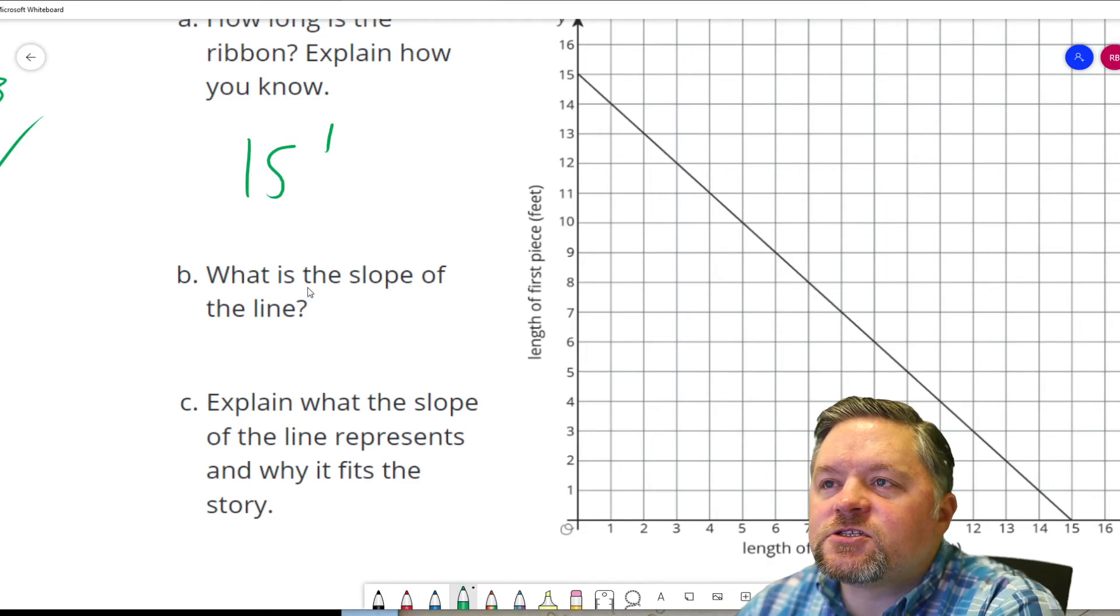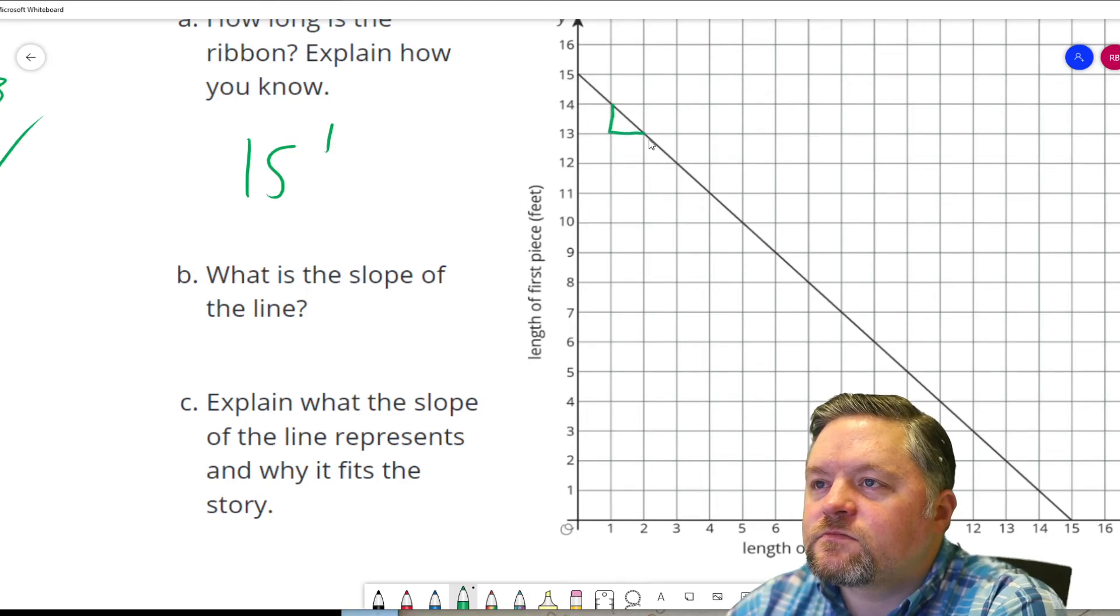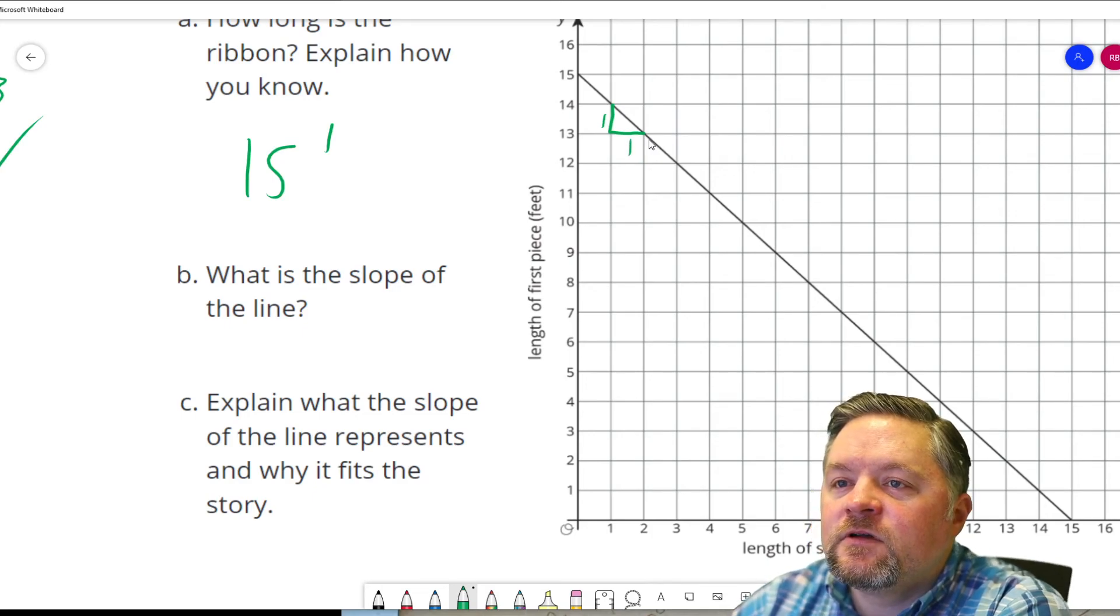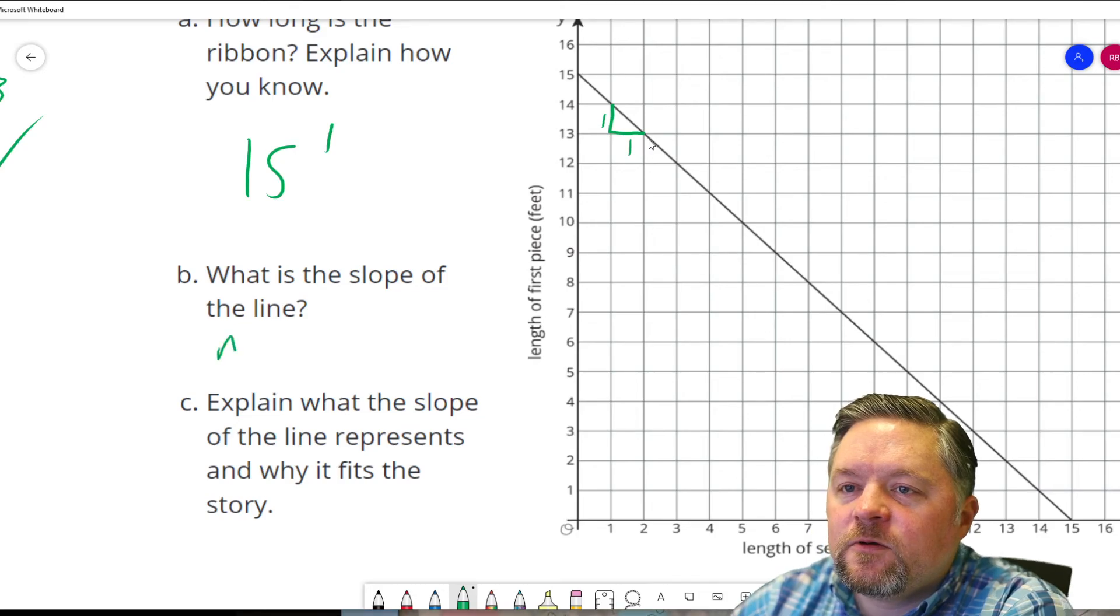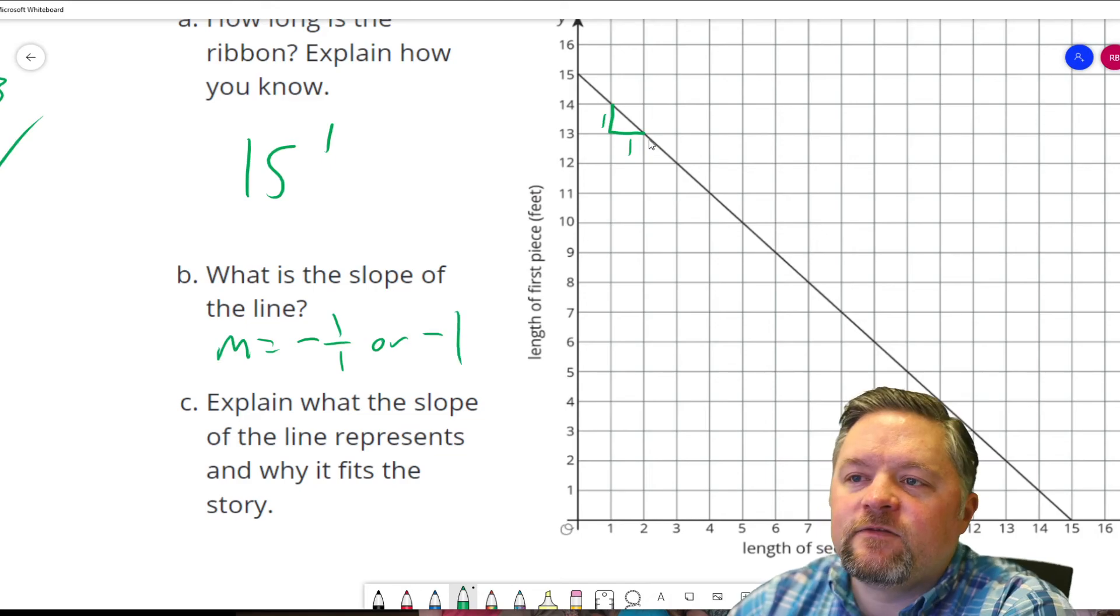What is the slope of the line? Let's draw a nice little triangle here somewhere. That has a rise of 1 and a run of 1, and it's going down. So, the slope is negative 1 over 1 or negative 1.